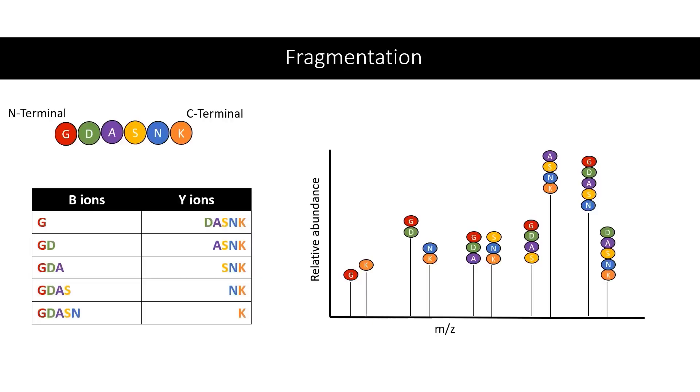Understanding this, let's now look at our peptide of interest. If we break this peptide at its first peptide bond, the associated B-ion is G, and the associated Y-ion is D-A-S-N-K. If we break this peptide at the second peptide bond, then the associated B-ions are G-D, and the associated Y-ions are A-S-N-K. The same pattern will continue for the remainder of the peptide.